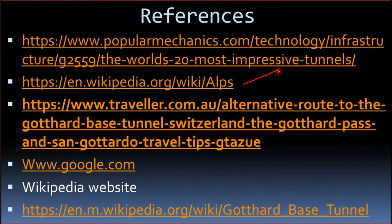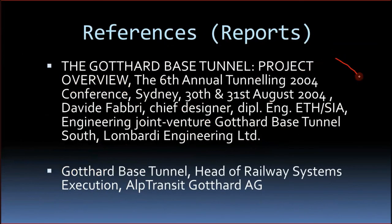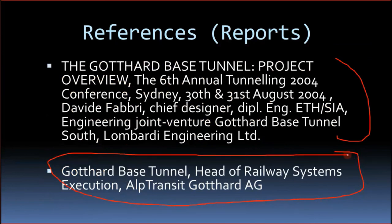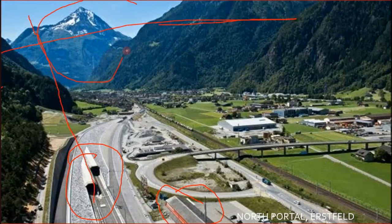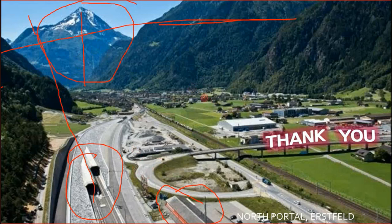References include Wikipedia, various engineering websites, an official report from AlpTransit Gotthard AG, and a report by Lombardi Engineering. This is a view of the northern portal at Erstfeld. You can see the river nearby and the Alps in the background — the big peak visible is relatively small compared to the higher peaks further along the tunnel route. Thank you — if you have any questions, please ask.